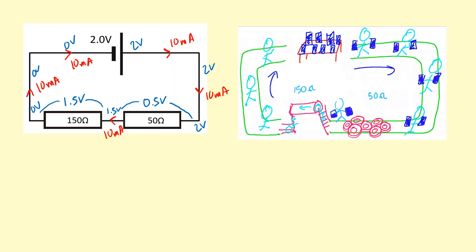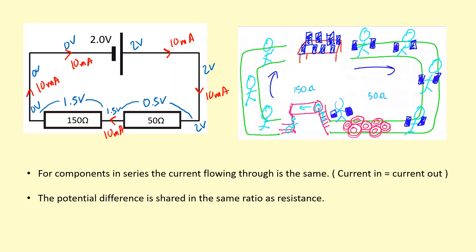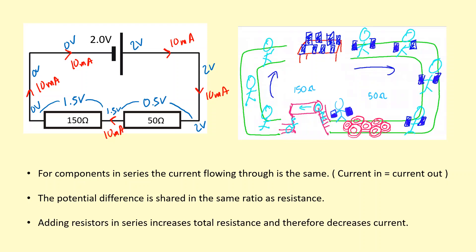So what's the effect of adding resistors in series? If you keep adding resistors in series, it just keeps increasing the resistance of the circuit, because the current has to go through all of those components — this just slows the current down. To summarize: for components in series, the current flowing through them is the same. The potential difference is shared in the same ratio as the resistance — the bigger the resistance, the bigger fraction of the potential difference it gets. And adding resistors in series increases the total resistance, which decreases the current.